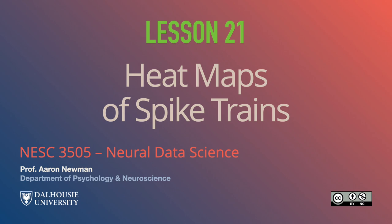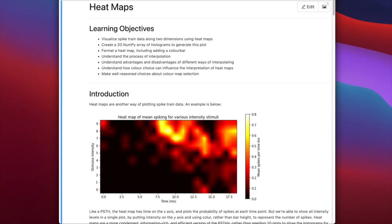Hello and welcome back to Neural Data Science. I'm Professor Aaron Neumann. Today we're going to learn how to plot heat maps of spike train data in Matplotlib. Our learning objectives are to visualize spike train data along two dimensions using heat maps. We'll create a 2D NumPy array of histograms to generate this plot, format the heat map including adding a color bar as a legend. We'll also understand interpolation and the advantages and disadvantages of different interpolation methods, as well as how color choice can influence the interpretation of heat maps.